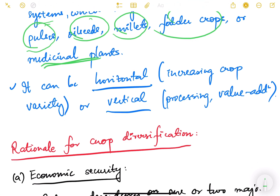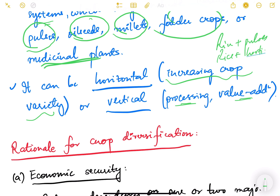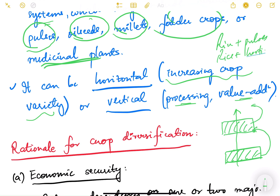Crop diversification can be horizontal — that is, increasing the crop varieties by mixing rice with pulses or mixing rice with horticultural or agroforestry crops. Or it can be vertical, meaning processing and value addition. For example, previously the farmer used to only produce rice; now he is also doing some processing in an agro-based industry and then selling it in the market. So this is vertical diversification — diversification of activities.